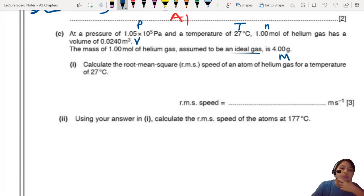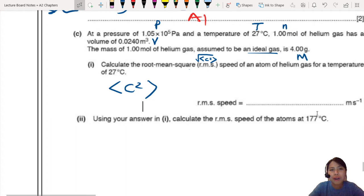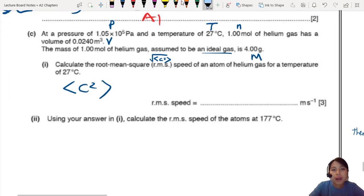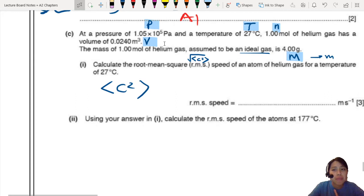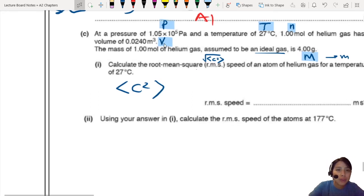So now they're asking you to calculate the root mean square speed of an atom of helium gas for a temperature of 27. Root mean square speed is this one. So, if you can find some kind of equation that has this in it, you're good to go. The question is, what equation to use? Ah, confusion. You see what we have? We've got P, T, N, V, and mass. I guess we can find M if we wanted to. But, how? How are we going to start this thing? So actually, there's many ways to do this. I'm going to write out some of the possible equations that we can use.